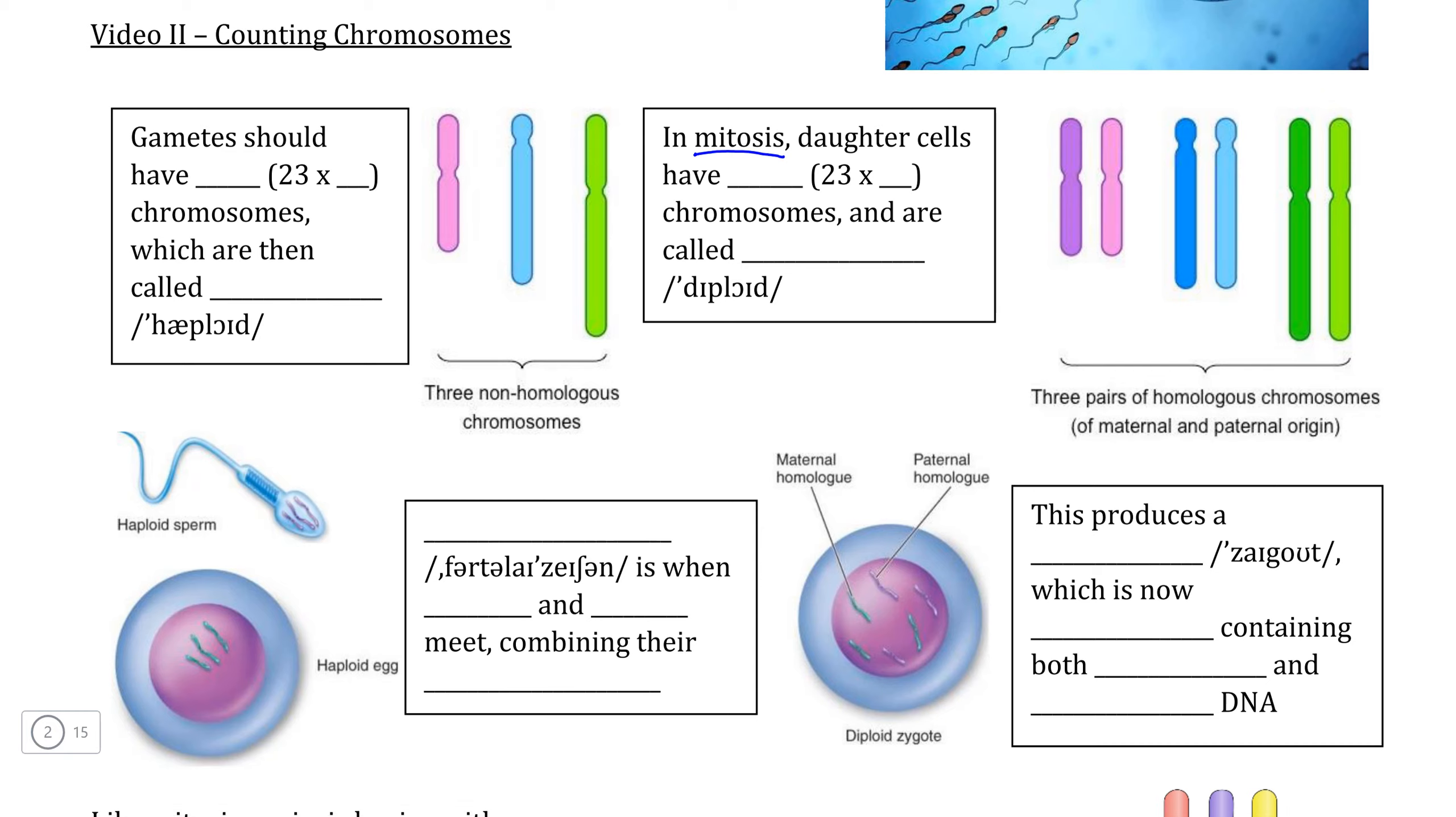Remember that the goal of mitosis is to produce two identical daughter cells with a total of 46 chromosomes each, or more correctly known as having two sets of 23 chromosomes, 23 from your mother and 23 from your father. Because this is the case, we can classify the daughter cells produced during mitosis as what we call diploid. The di meaning two and ploid in reference to a word called ploidy, which is a measurement of how many chromosomes an individual cell has.